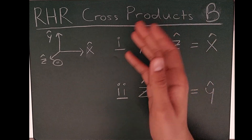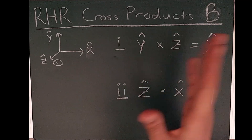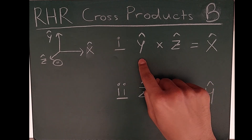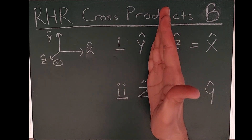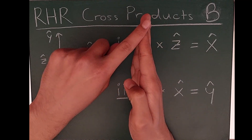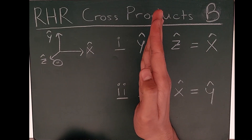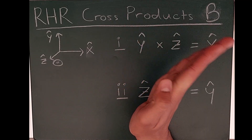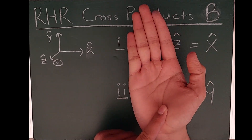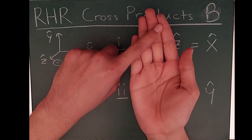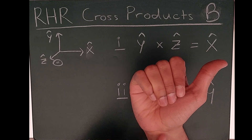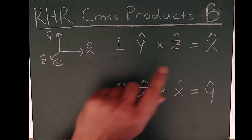Now let's use this curl-fingers right-hand rule for the same two examples. For Y hat cross Z hat: point all four fingers north in the direction of Y hat, then curl them in the direction of Z hat — out of the page. You'll need to rotate your hand about 90 degrees to curl your fingers upward out of the page. The thumb ends up pointing to the right — in the direction of X hat. Same result as before.